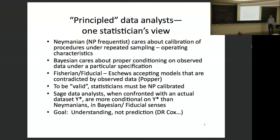Bayesians care about proper conditioning on observed data. You derive a posterior distribution given the observed data. This particular specification is the model — you basically have to believe the model. And even if the model is a mixture model and you try to do model selection, you condition on one of the models being considered as true.